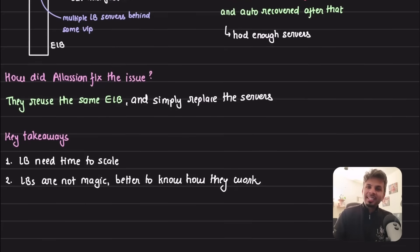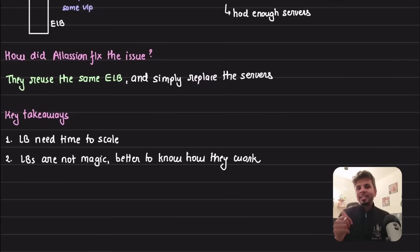Few key takeaways for you. First, LB takes time to scale, so don't consider load balancers as a magical thing or something that is infinitely scalable. If you are expecting spikes, make sure that your load balancers are quote-unquote warm. Reach out to AWS or your provider and ask them to pre-warm your load balancer. Second, load balancers are not magic, they are not black boxes. Try to know how they work, like the time it takes to warm up and add more servers. It helps you make better design decisions, especially while operating at scale.